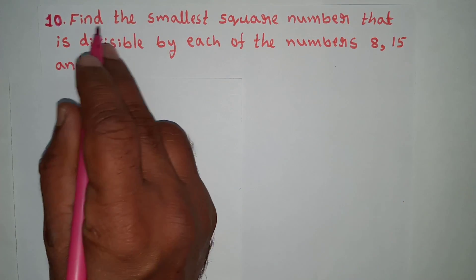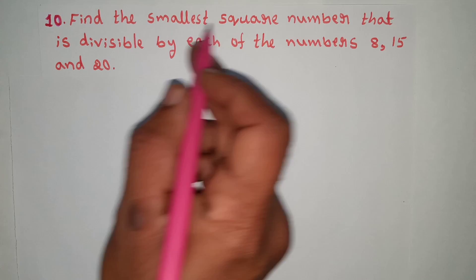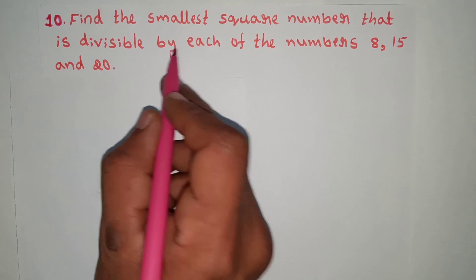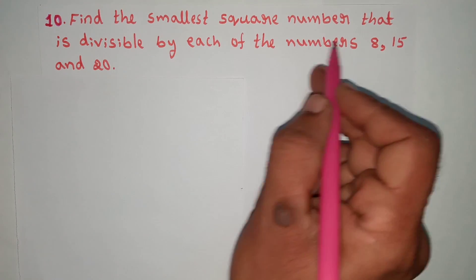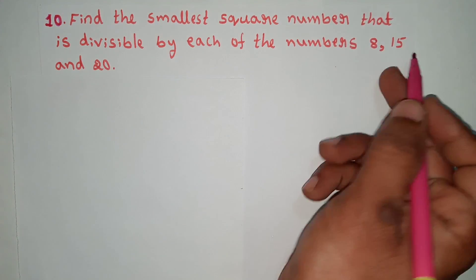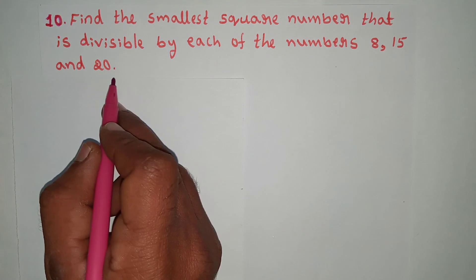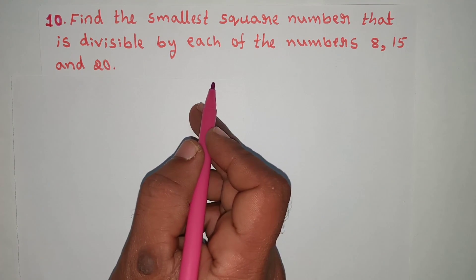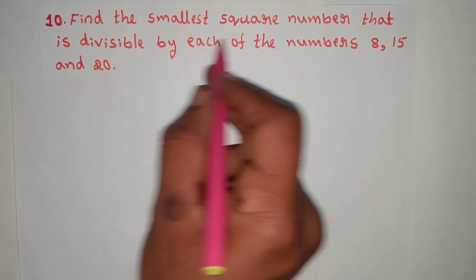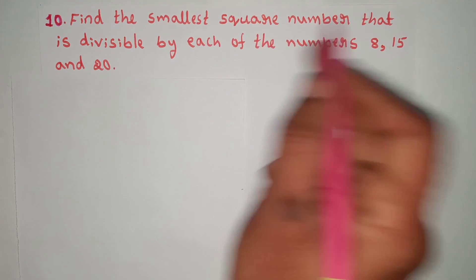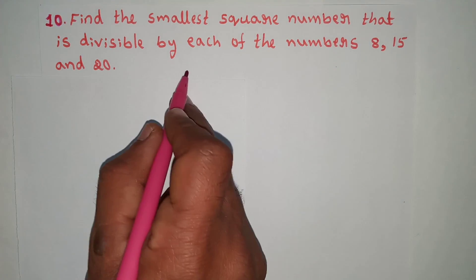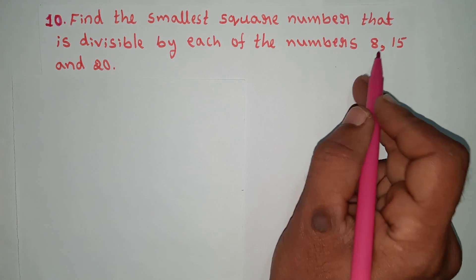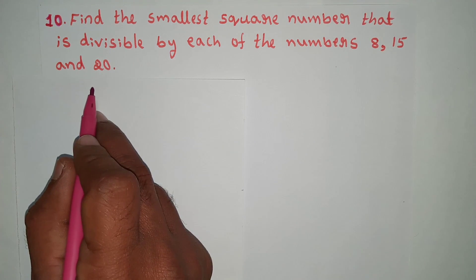Problem 10: Find the smallest square number that is divisible by each of the numbers 8, 15, and 20. We need to find the smallest square number divisible by 8, 15, and 20.